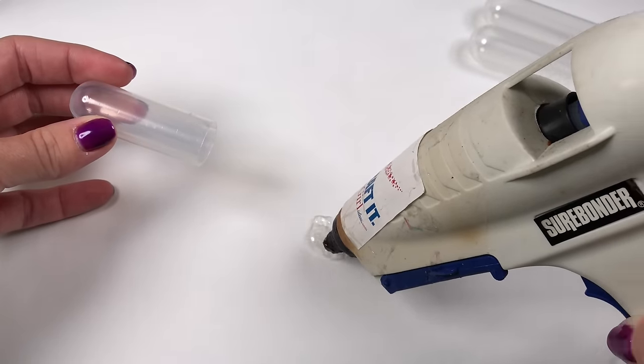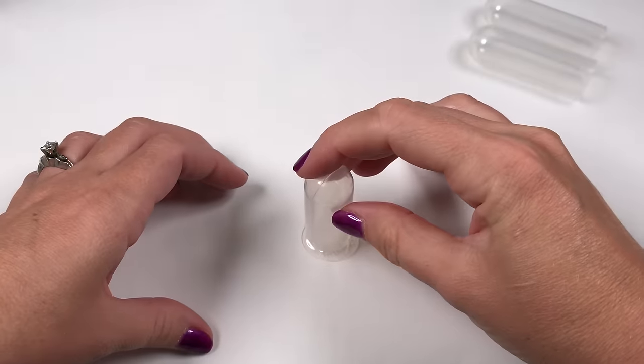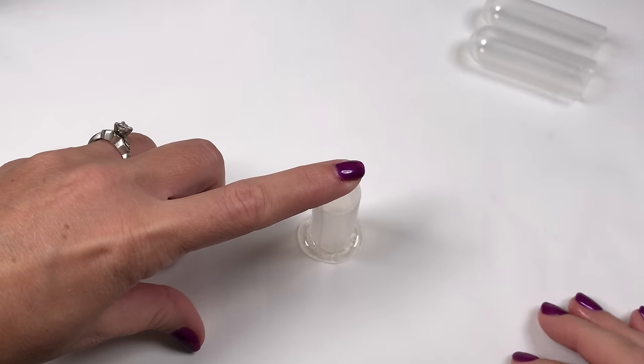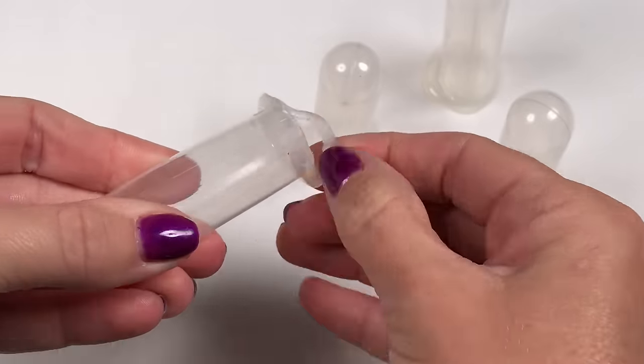Squirt the hot glue on your parchment paper and then seal the bottom of your water bottle. Make sure it's completely dry before you remove it from the parchment paper, and then you can peel any excess on the outside.